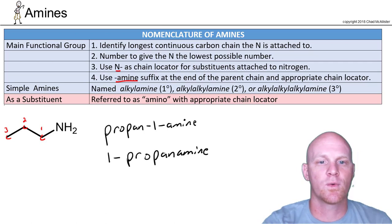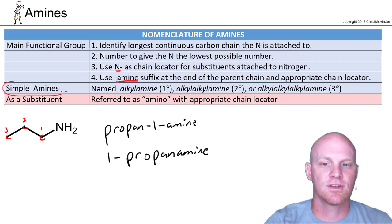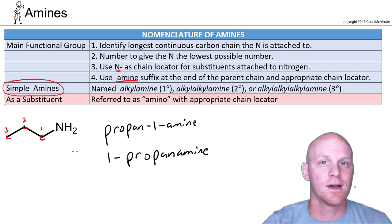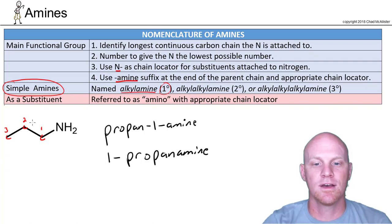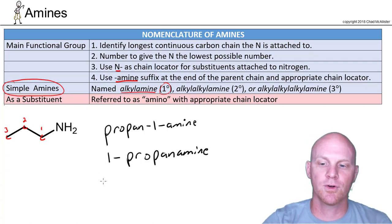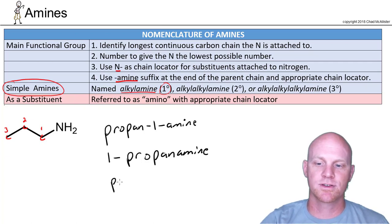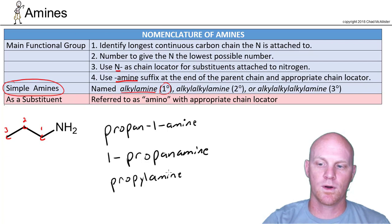Now one other thing we've got to worry about here is that as a simple amine, and this one's fairly simple, there's another accepted nomenclature here for a common name here. And for this primary amine here, we're just simply going to call it an alkylamine. So in this case, instead of propanamine, we'll just refer to this as being a propyl group. And so we'll just simply call this propylamine, all one word here.